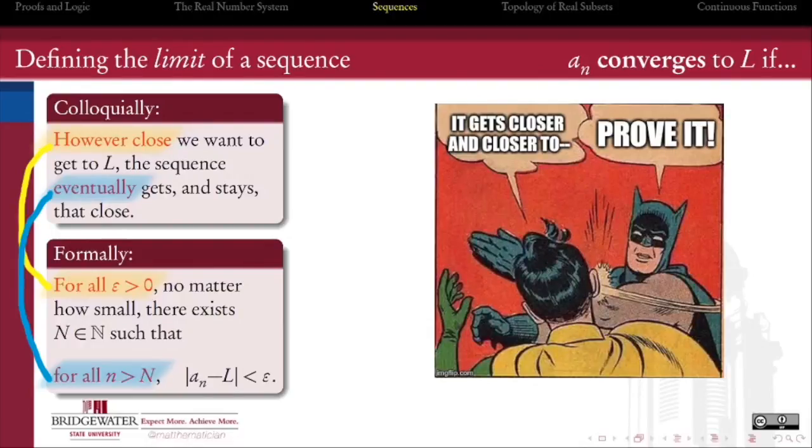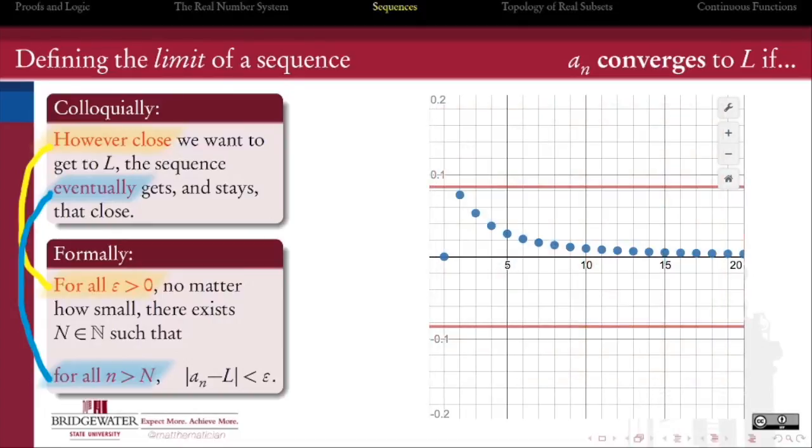We have a tool for measuring distance: absolute value. And we have a friend, epsilon, a quantity that traditionally can be as small as we like. If we put them together, we can get a distance that can be as small as we like. We say then that a sequence a_n converges to a number L if, no matter how close to L we wish to get, the sequence will eventually get that close and stay that close.